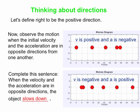So the moral here is that just because acceleration is positive doesn't mean an object speeds up, and just because it's negative doesn't mean it slows down. What matters is which direction the acceleration is with respect to the velocity. When the acceleration and velocity are in the same direction, the object speeds up. When velocity and acceleration are in opposite directions, the object slows down.